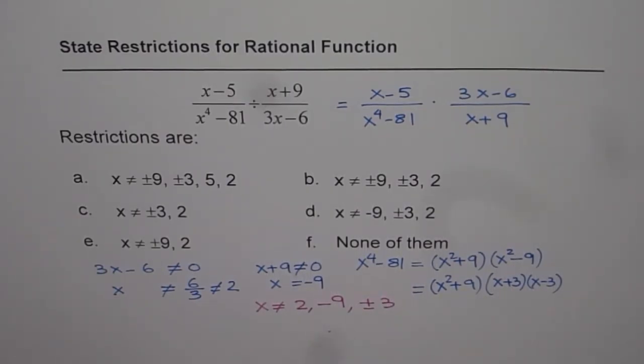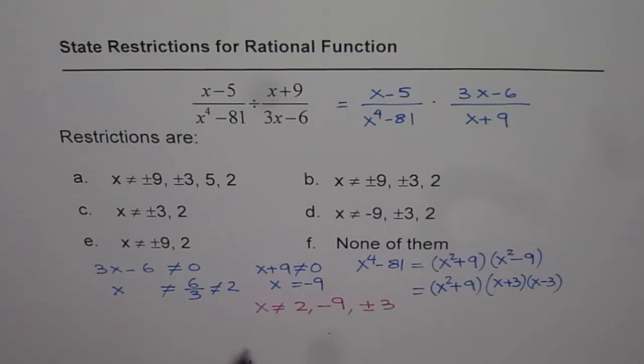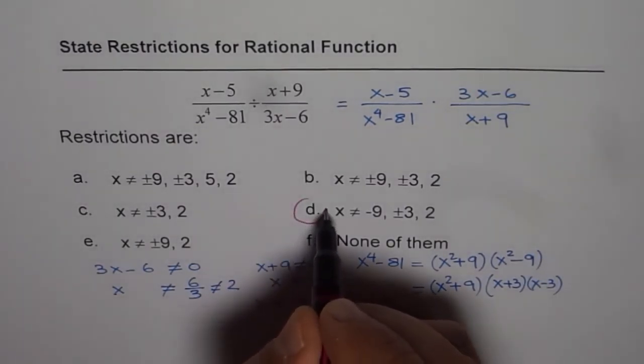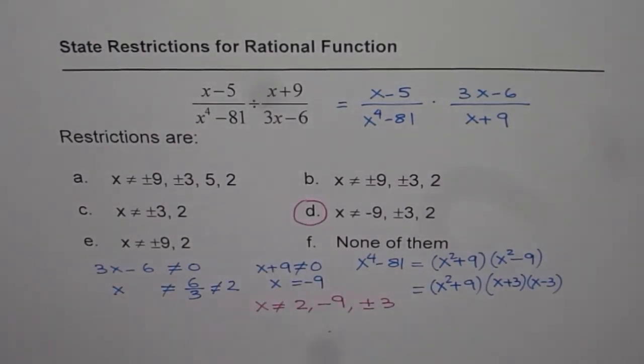So these are all the restrictions the function should have. The one which matches is option D. Therefore, that is the right solution.